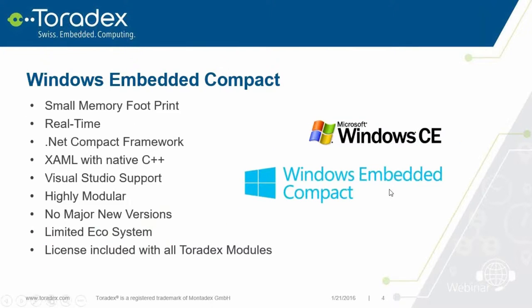Before we talk about Windows 10 IoT Core, let's briefly talk about Windows Embedded Compact — basically the operating system you would have chosen if you wanted a small ARM embedded device with a Windows-like API. Also called Windows CE, it is a very small footprint OS — we're talking between 10 to maximum around 100 megabytes memory footprint. It's a real real-time operating system.